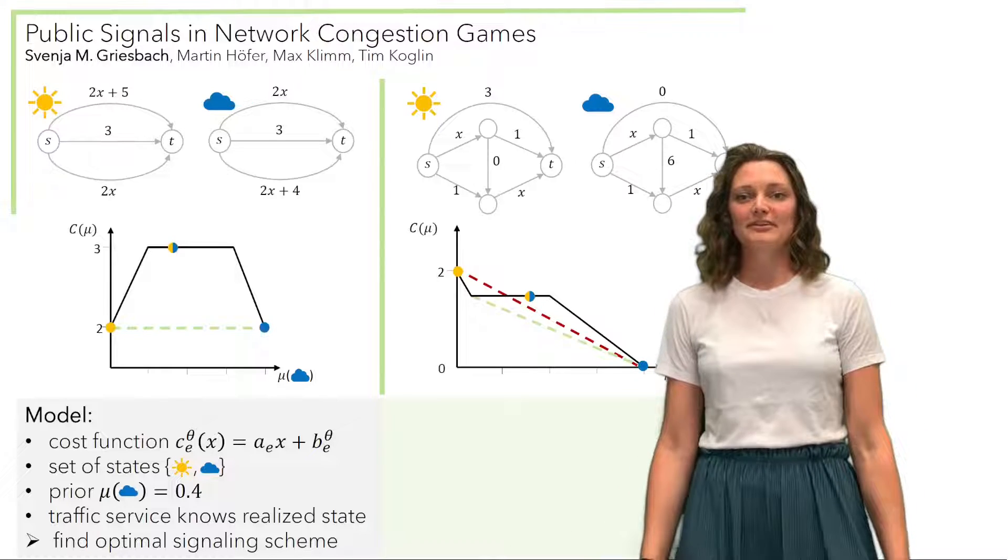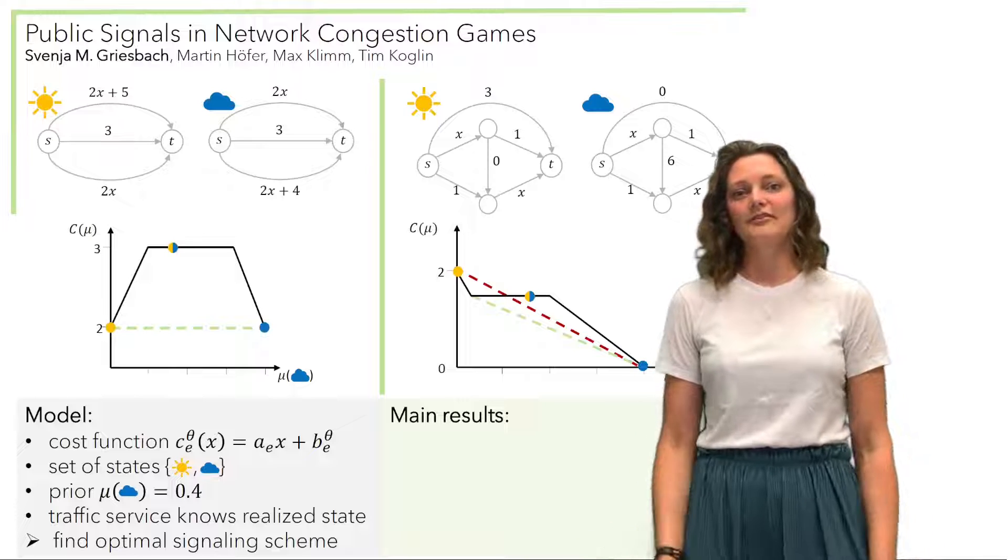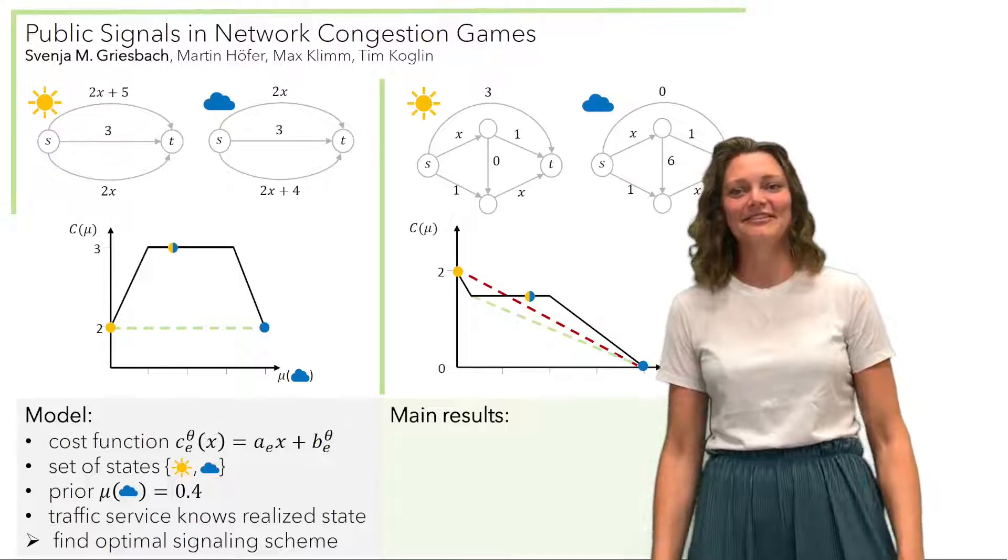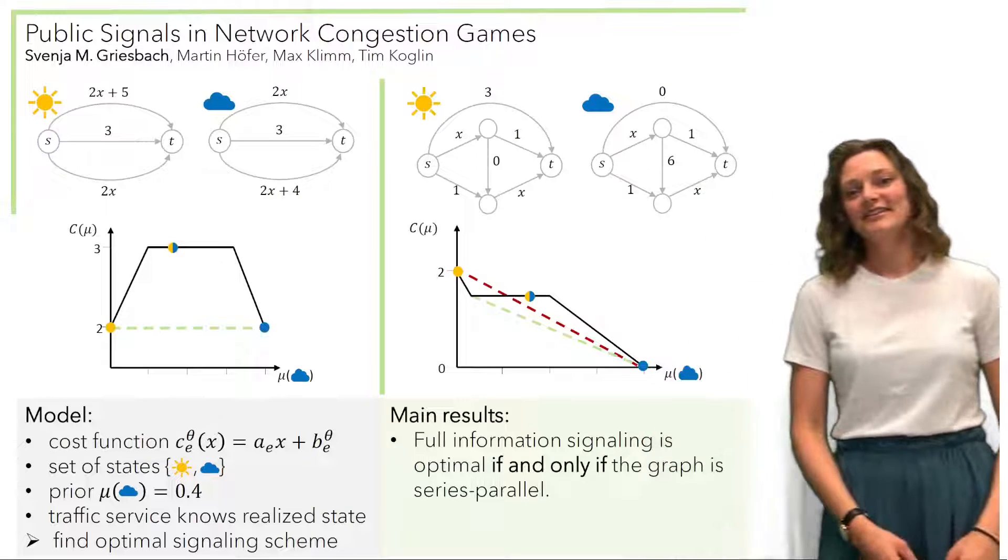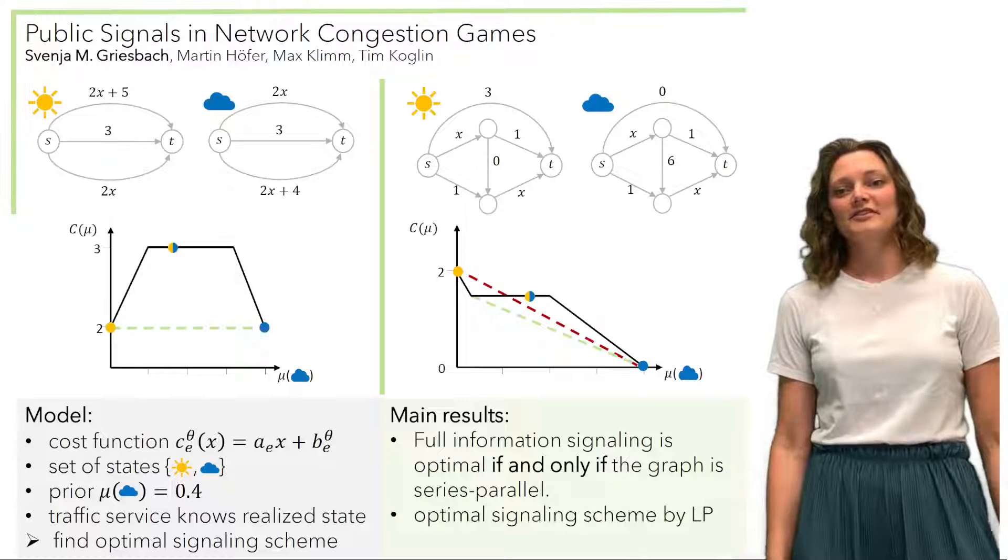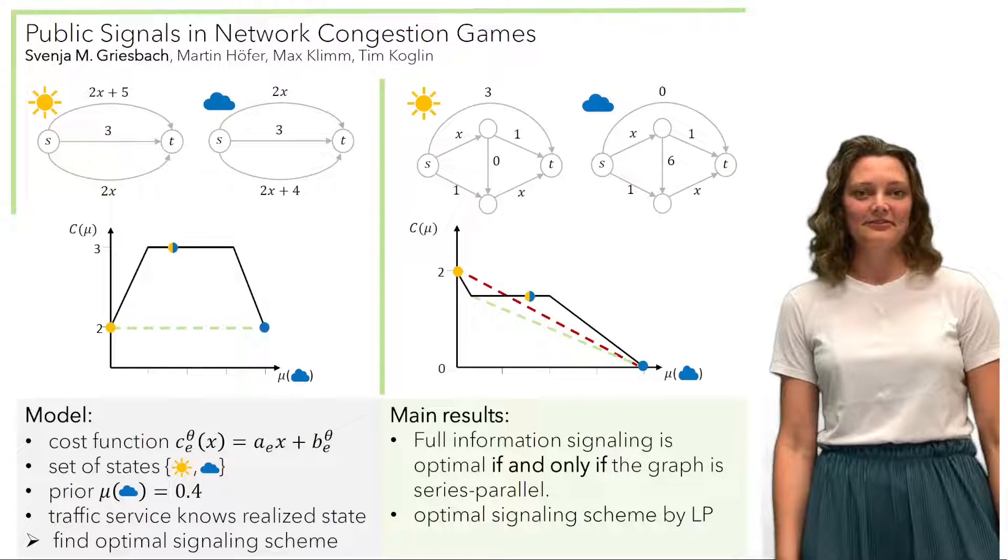So our main result actually gives a characterization of which graphs are, for which graphs we always want to give full information. And these are exactly the series-parallel graphs. And in addition to this, we also give an LP which solves this in polynomial time for some specific instances.